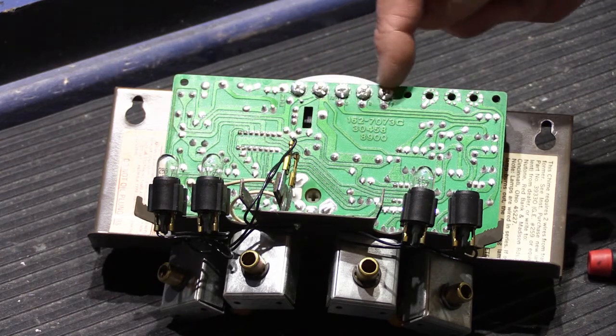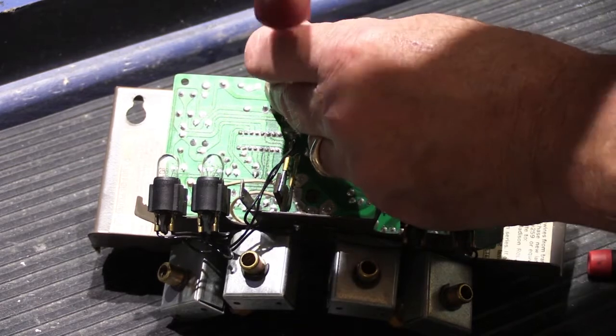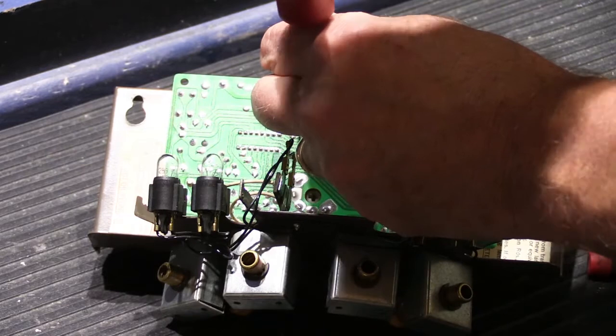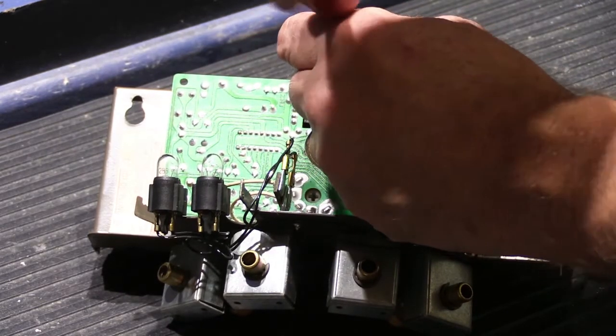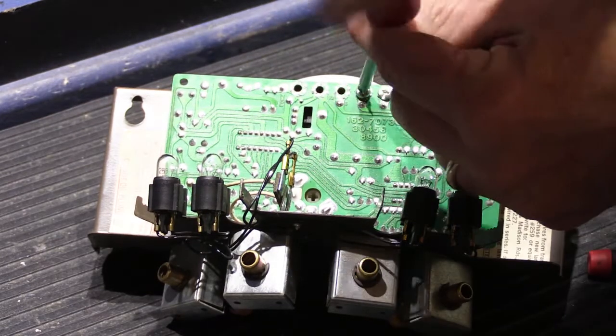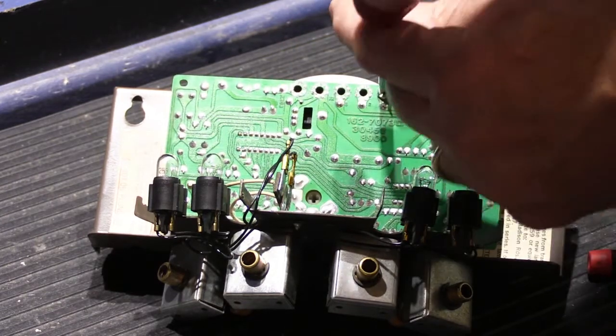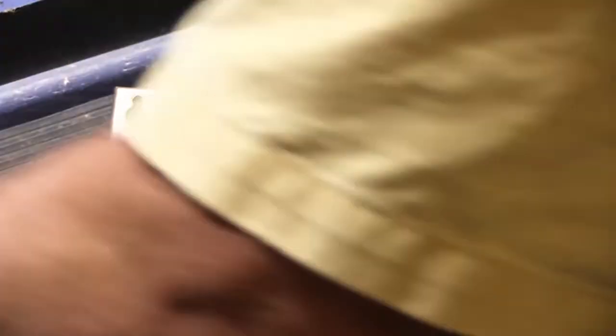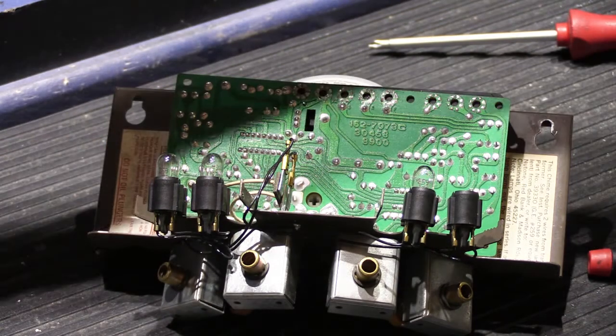The first thing we're going to do is I'm going to remove the screws that hold it to the base, and that would be the five screws for the common, transformer, side, rear, and front.